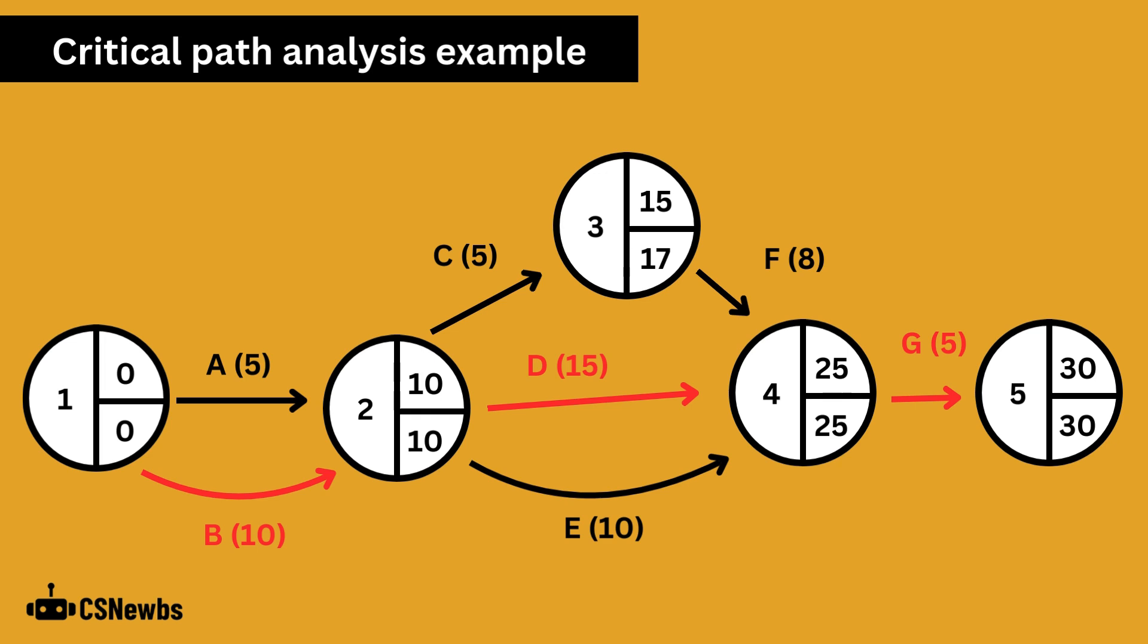To work out the critical path, we need the route with no slack each time. This identifies the key tasks which must not be delayed, or they will delay the whole project's estimated end time. So in this example, it is activity B, activity D, and activity G, which is the critical path.